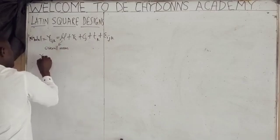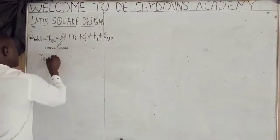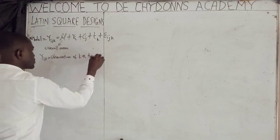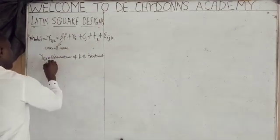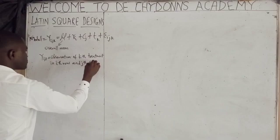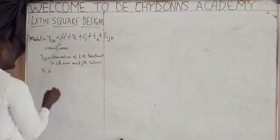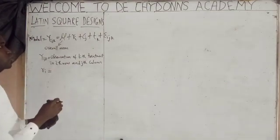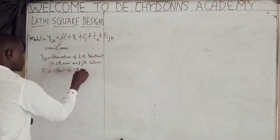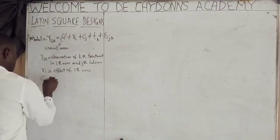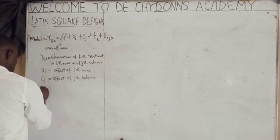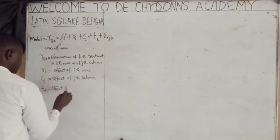YIJK simply means the observation of the Kth treatment in the ith row and jth column. RI means the effect of the ith row. CJ means the effect of the jth column. TK means the effect of the Kth treatment.